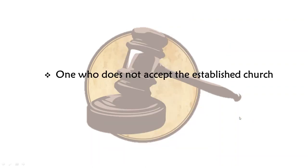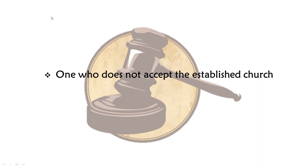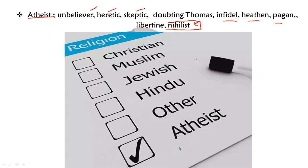One who does not accept the established church — what would you call that person? The answer is atheist. The synonyms are unbeliever, heretic, skeptic, doubting Thomas, infidel, pagan, libertine and nihilist. So an atheist is a person who does not believe or accept the established church.